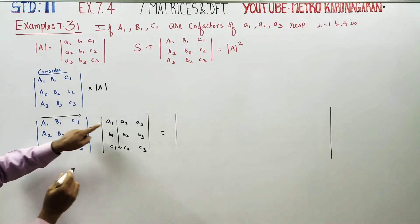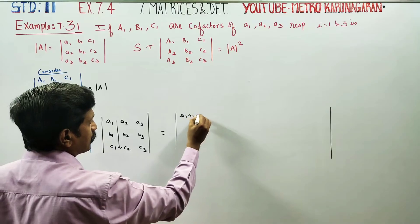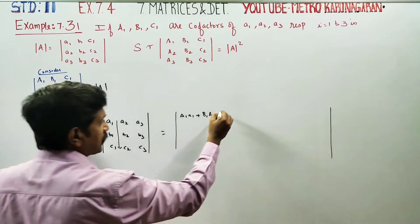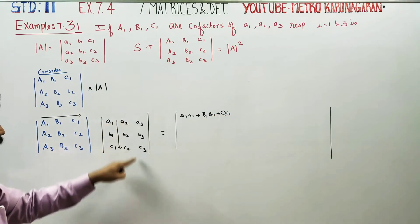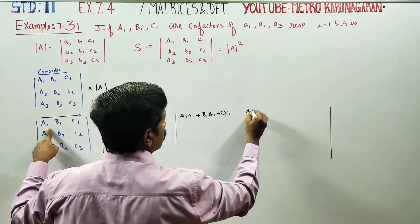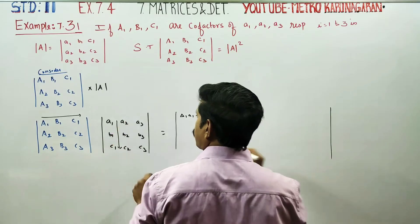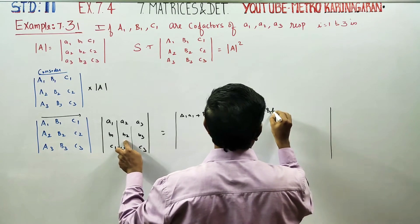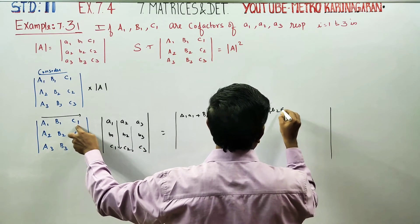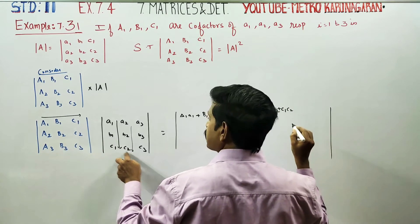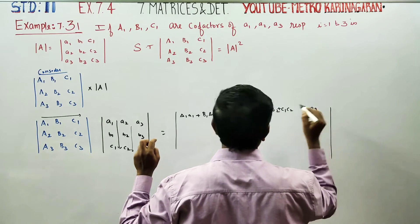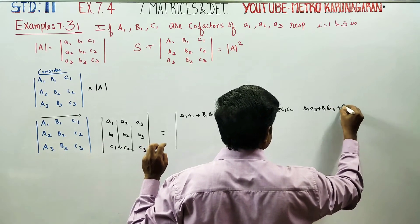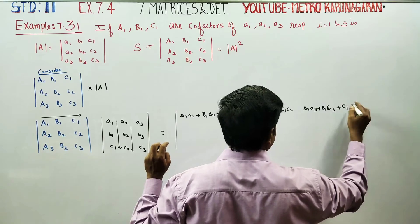Let's start. First element into first element: a1 times A1, then b1 times B1, then capital C1 into c1. Moving to the second column: a1·A2, b1·B2, c1·C2. And the last one for row 1: a1·A3, b1·B3, c1 into small c3.